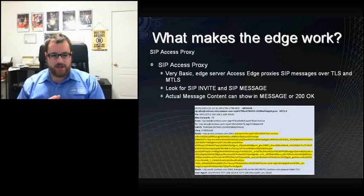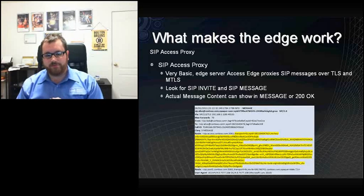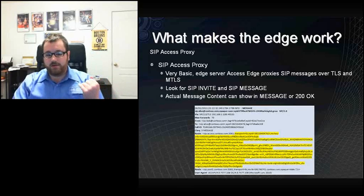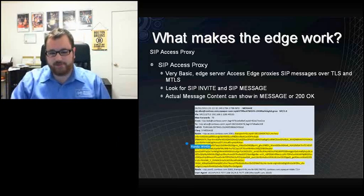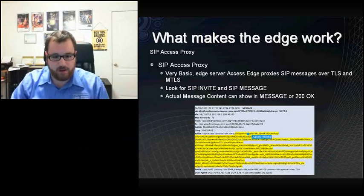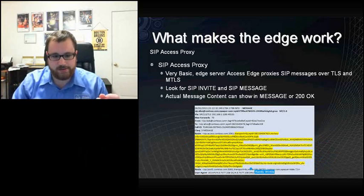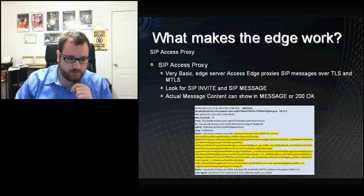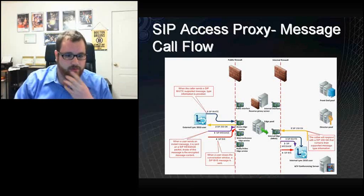Things to look out for: this screenshot is a snooper trace of a message. You can look for SIP invite and SIP message — that's where you're going to see IMs. Actual message content can show in a message with a 200 OK in invites. If you're looking at snooper logs and trying to figure out if IMs are getting through, this big block of unreadable text is an IM — that's the encrypted message. So that's an instant message being sent through the Access Edge.